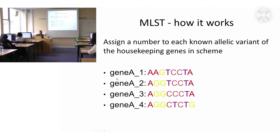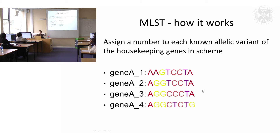If you imagine you had gene A, and each of these is a different organism of the same species — a different strain — you can see there are slight mutations, slight differences within this gene. It's the same gene, just slightly different between the different strains of bacteria you're looking at. We call these allelic variants. You use this to look at how the bacteria have evolved and how they've diversified.